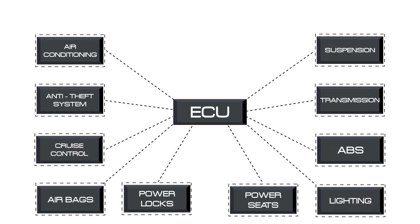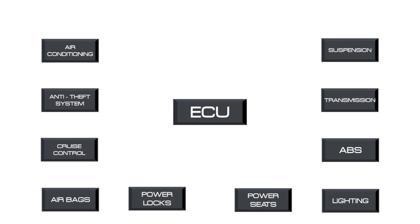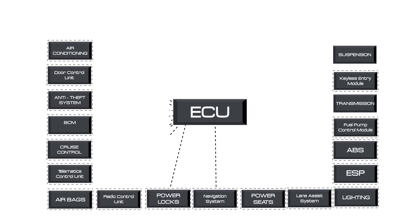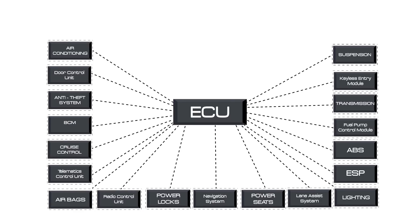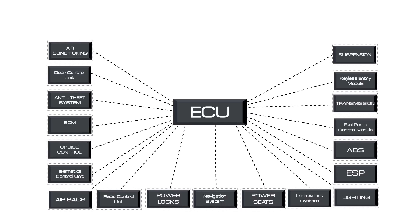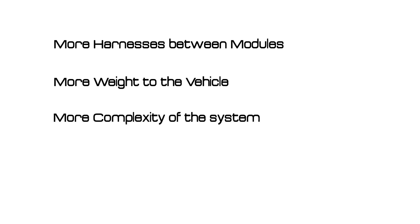However, as environmental regulations became stricter, vehicles were required to have more and more sensors and modules to control emissions from exhaust parts. They needed to share information in real-time to effectively control emission. This meant more wire harnesses were required between modules, and therefore much more weight to the car, more complexity of the system, and eventually higher cost.